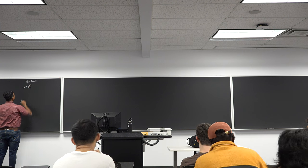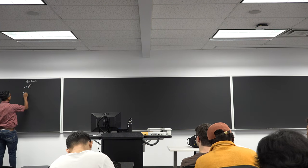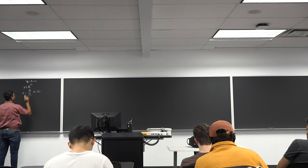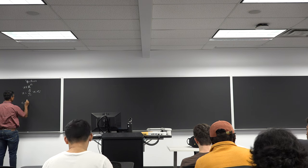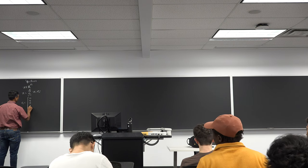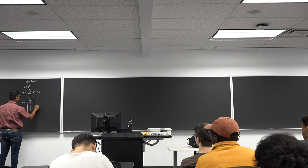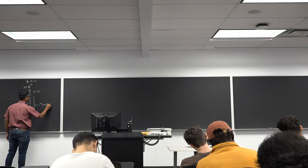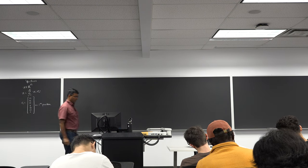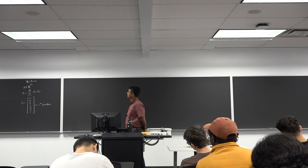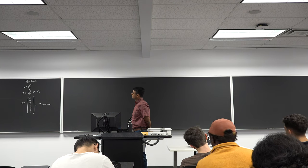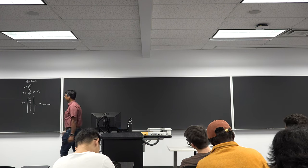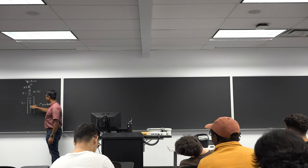So, x is a vector in ℝⁿ. We write x as the summation of xᵢ eᵢ for i equals 1 to n, where eᵢ is the unit vector in the i-th dimension. For example, e₄ is the unit vector with a 1 in the fourth position and zeros elsewhere.